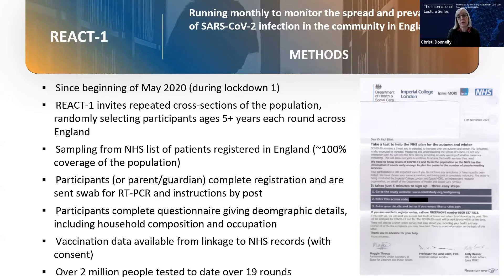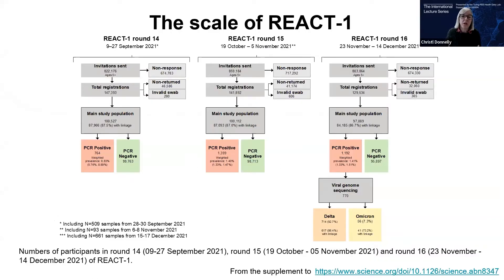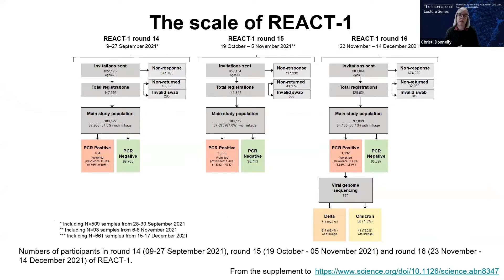Over the course of 19 rounds, over two million people took part — a very large study indeed. The aim was to have at least 100,000 participants in each round. In rounds 14, 15, and 16 (September to December 2021), nearly a million people in each received invitations, with considerable non-response. Early on, over 30% of those approached took part — extremely high for this type of survey — partly because REACT offered one of the few ways to get tested for infection and people were spending a lot of time at home.